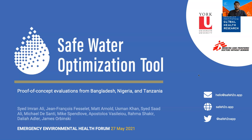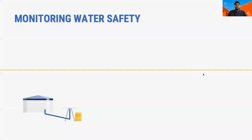To start this presentation off, let's talk about the problem that the SWOT was designed to solve. Globally, chlorination is the most widely used method of water treatment and is particularly well-suited to humanitarian contexts because it can provide lasting protection against recontamination. However, ensuring that residual protection is sufficient to ensure water safety along the entire water chain can be challenging.